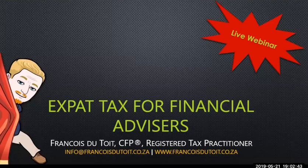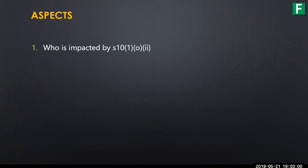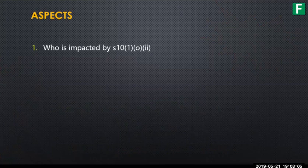45 minutes is not a lot of time, so I'm not going to waste any further time. Let's get into what we're going to be talking about today. I'm going to look at who is actually impacted by Section 10102, which is specifically what we commonly refer to as expat tax — the exemption that is now falling away, or where they put the new exemption of only a million rand in.